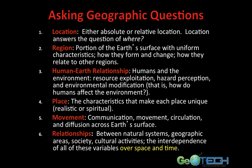We look at the human-Earth relationship — humans and the environment — such as resource exploitation, hazard perception, and environmental modification. Big issues today include ozone depletion and climate change, and we really ought to examine the extent to which humans are modifying the environment. We look at place — the characteristics that make each place unique. We also look at movement: movement of communication, circulation of people, air flow, and water movement. All of this movement and diffusion across Earth's surface becomes a major player when discussing geographic questions.